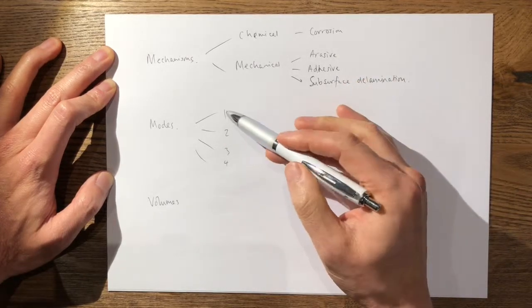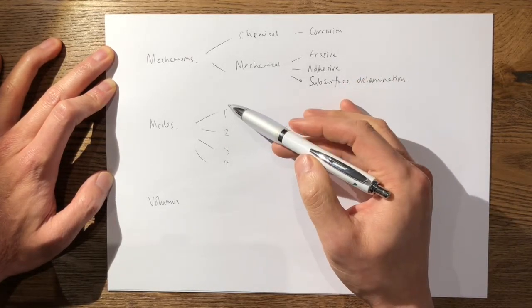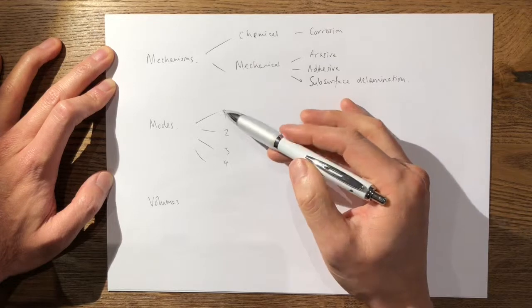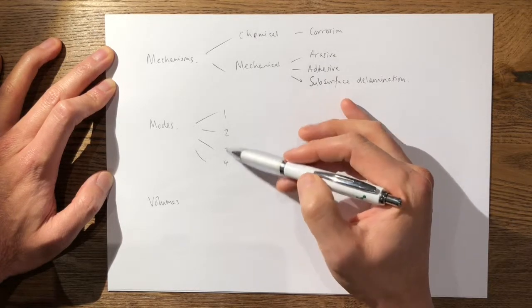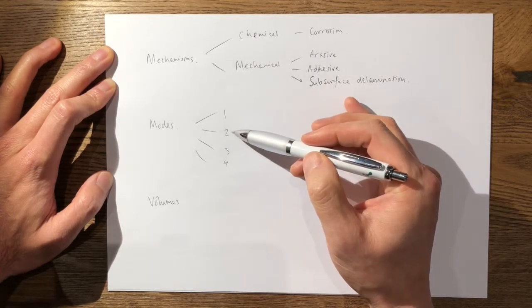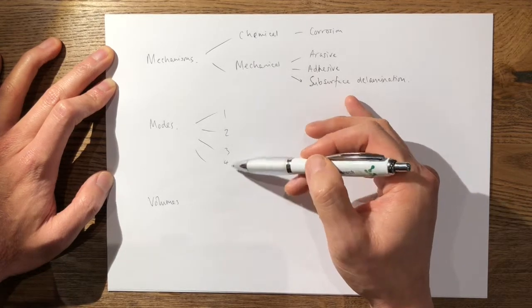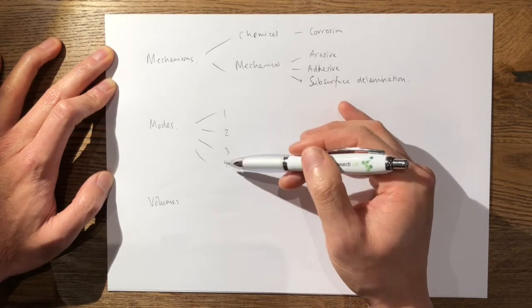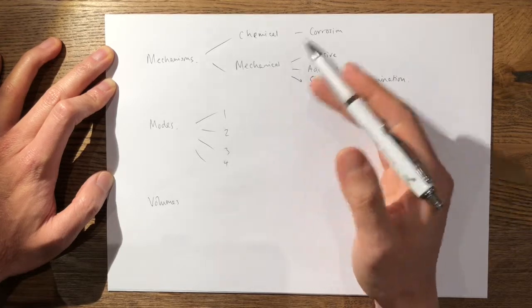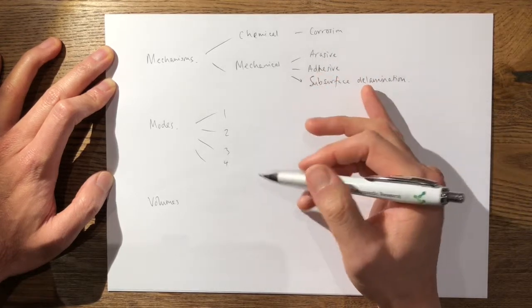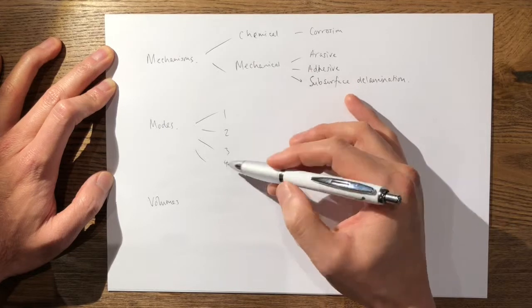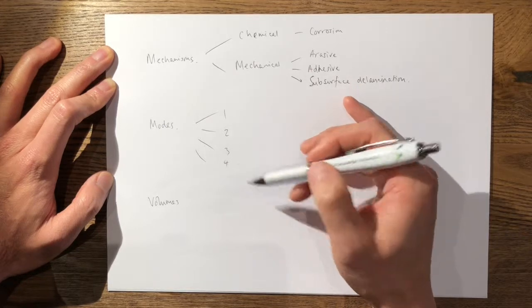Mode one is between two intended articulating surfaces. Mode two is between one intended and a non-intended articular surface. Three is third body, and four is between two non-intended articulating surfaces, such as backside wear or even at the trunnion.